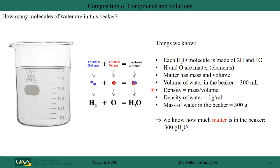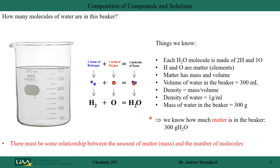There is a relationship between volume and mass, and it's called density. I can use that relationship for water. The density of water is one gram per milliliter. Therefore, the mass of water in this beaker is 300 grams. So now we know how much matter is in this beaker — 300 grams of water. There must be some relationship between the amount of matter, the mass, and the number of molecules.